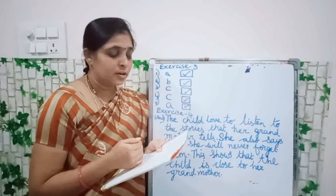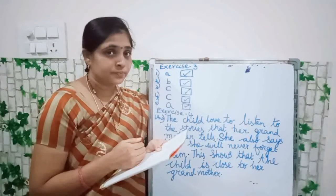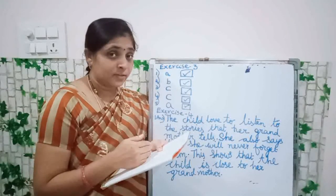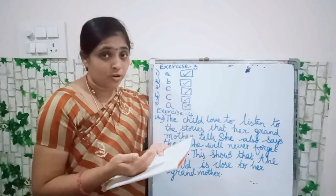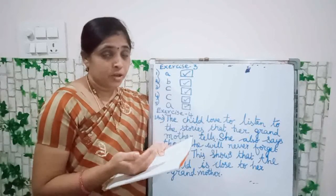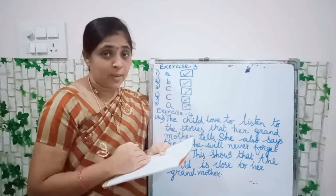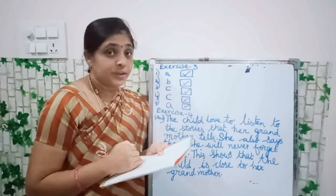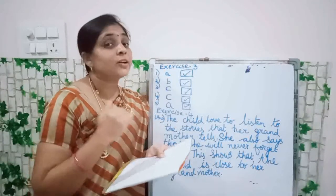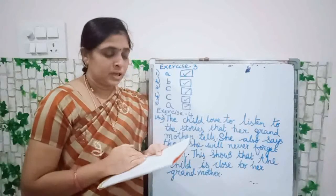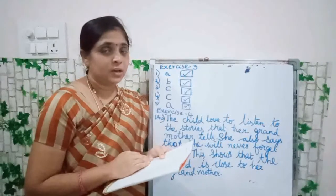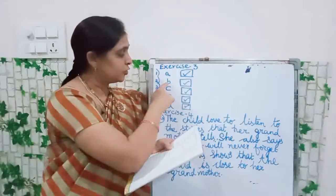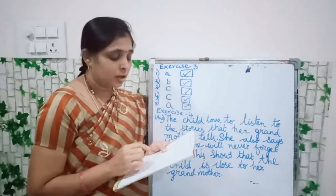Let us see another one: forest — that's wrong. When you see valleys — that's also not correct, not sounding the same as green. So the correct option is B — queen. Green, queen. All of you tick in B.